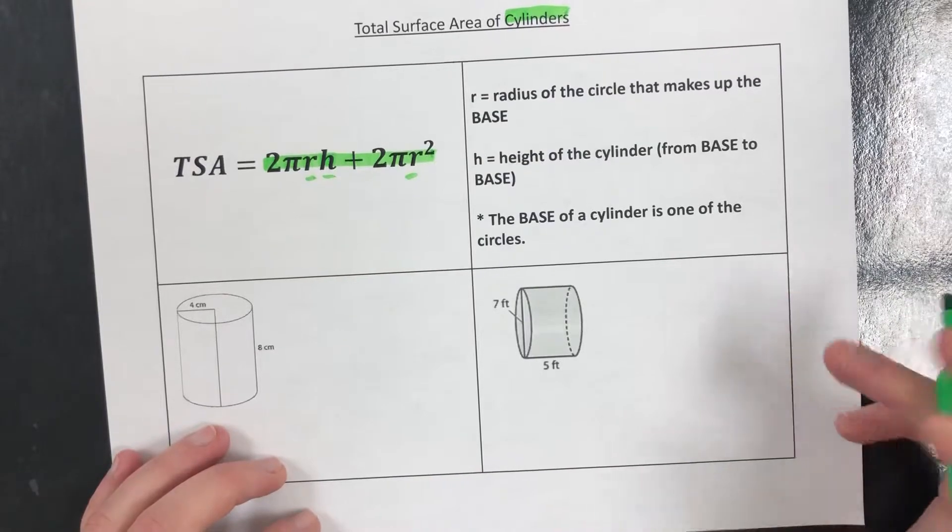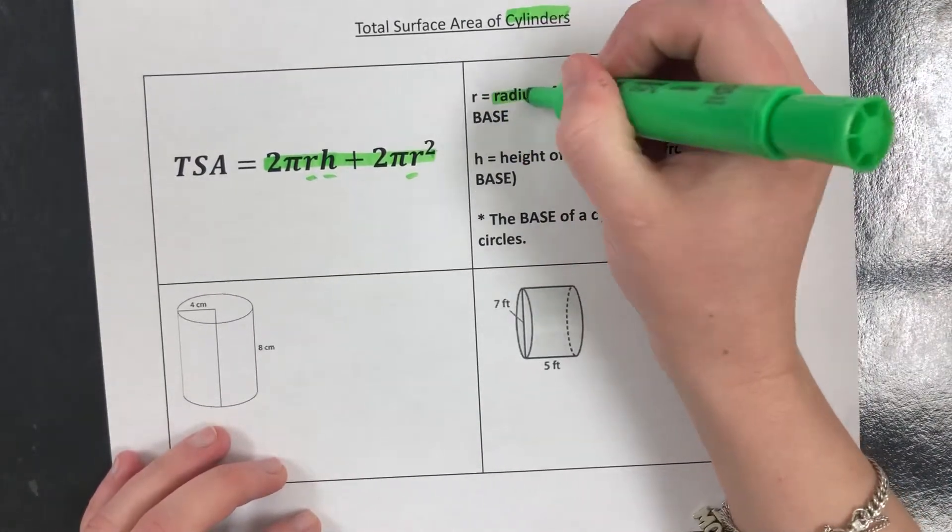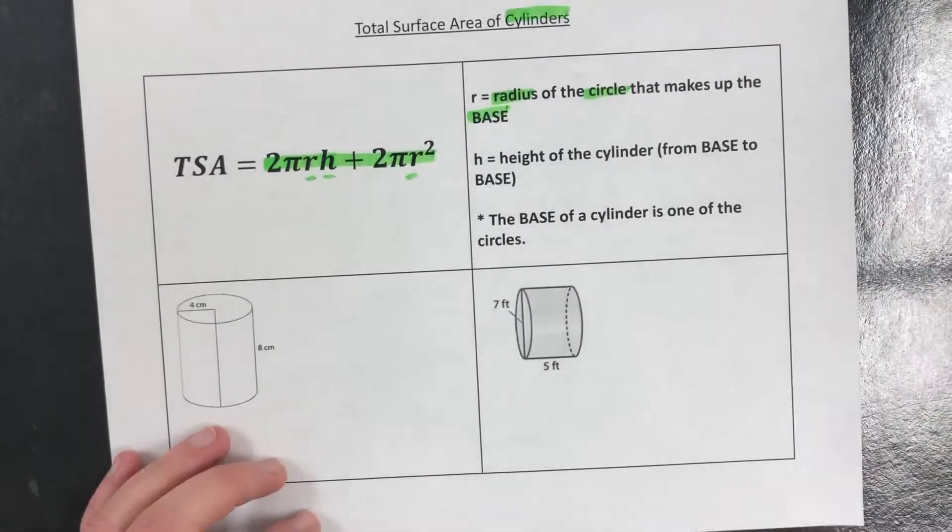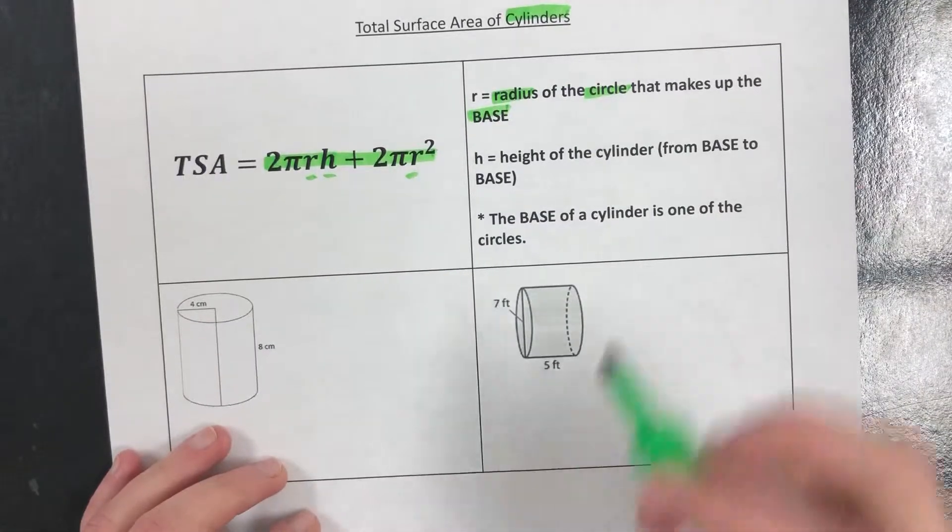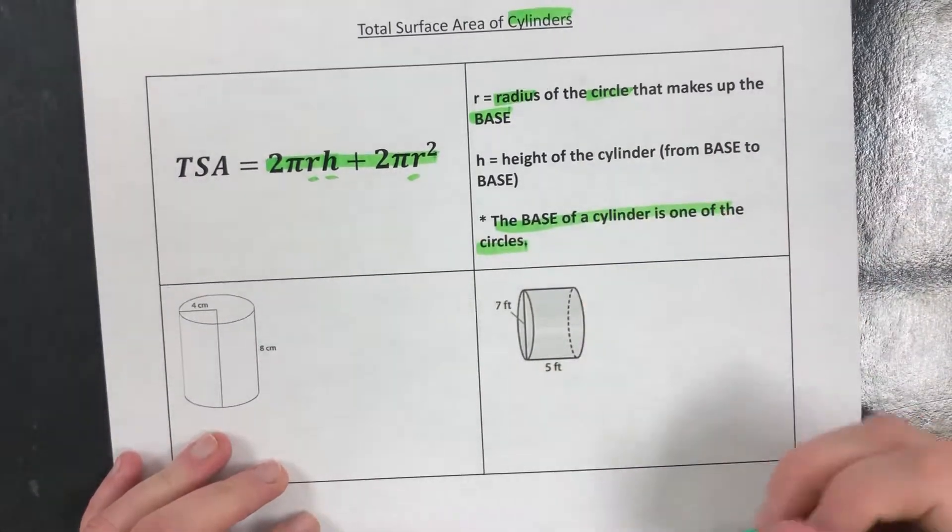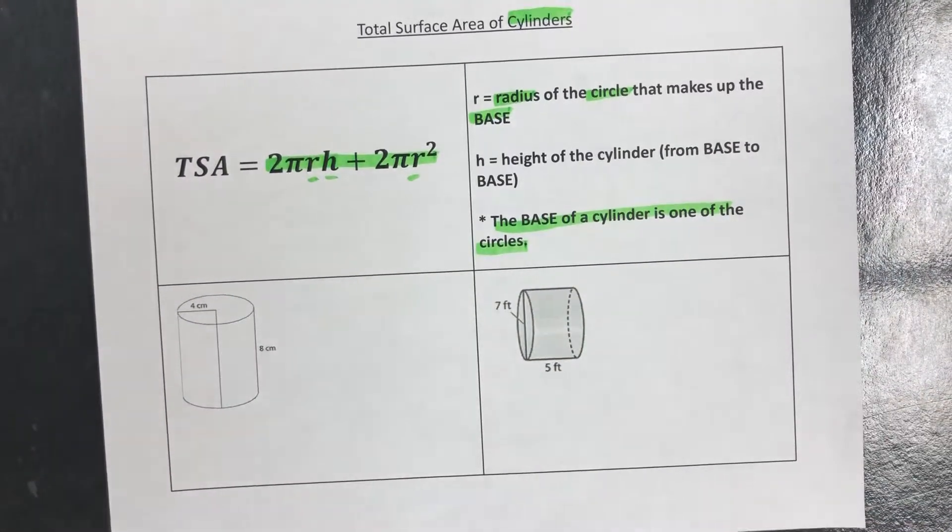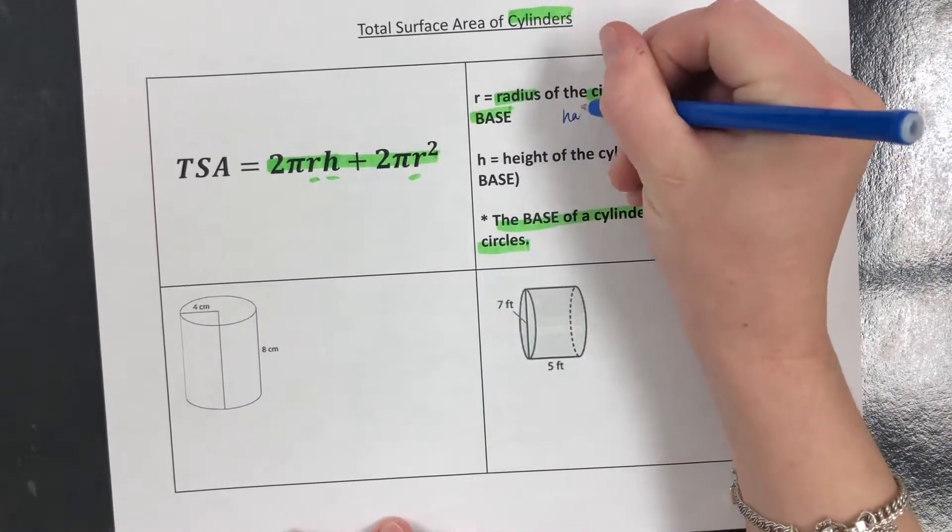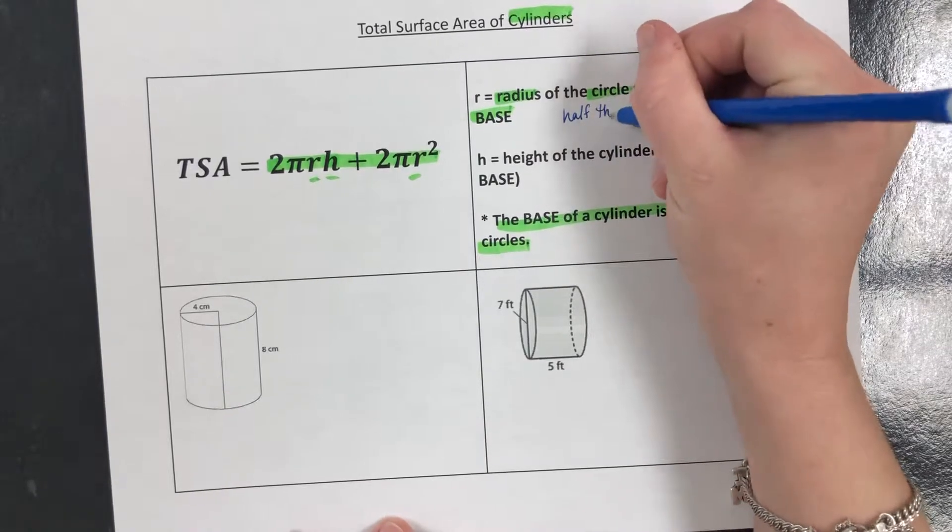So r is the radius of the circle that makes up the base. On our cylinders, the base of the cylinder is one of the circles. Remember that radius is half the diameter.